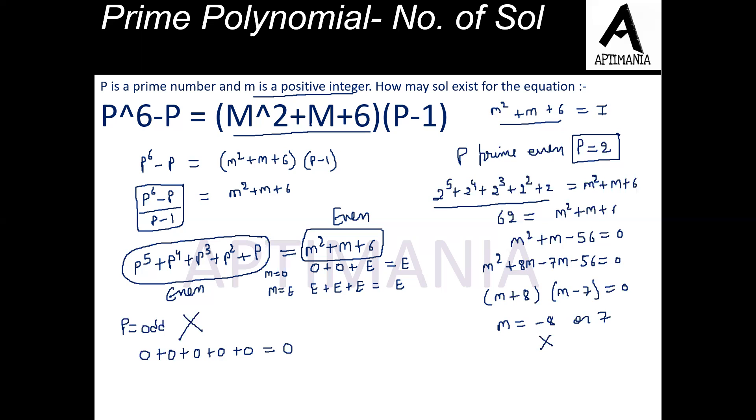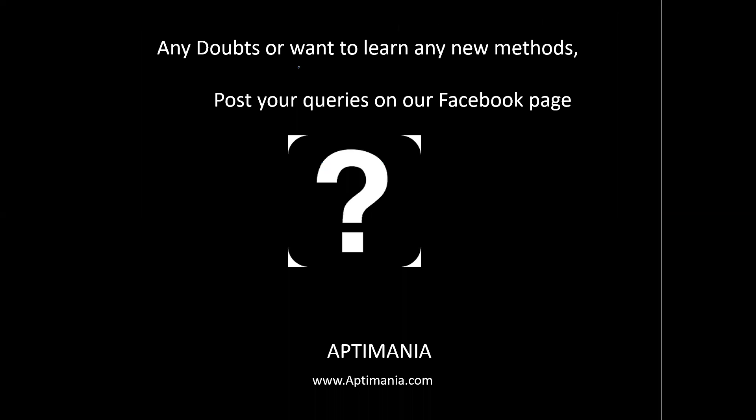Now M is either minus 8 or 7. But M cannot be minus 8. Why? Because here it is given that M is a positive integer. So the only possible value for M is 7. So only one solution exists for this equation. So the correct answer is only one solution is there. That is M equal to 7. I hope this question is clear to you. Thank you.